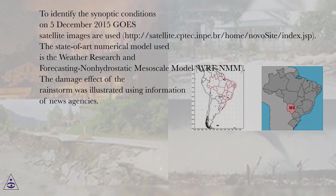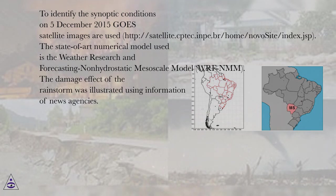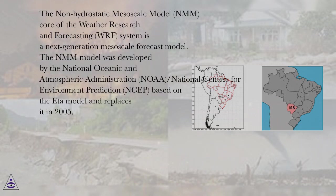The state-of-the-art numerical model used is the Weather Research and Forecasting Non-Hydrostatic Mesoscale Model, WRF-NMM. The damage effect of the rainstorm was illustrated using information from news agencies. The NMM core of the Weather Research and Forecasting (WRF) system is a next-generation mesoscale forecast model.